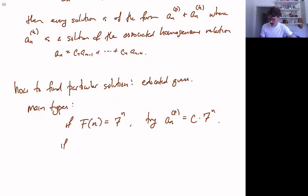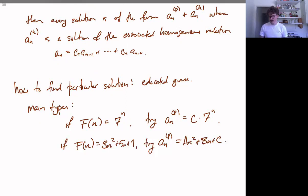So the other type is, if f of n is a polynomial, so for example, 3n squared plus 5n plus 1, then your guess with a particular solution should be some polynomial of the same degree. So a n squared plus b n plus c. And again, we cannot take just any real numbers for these. We have to figure out some numbers that make it a solution.